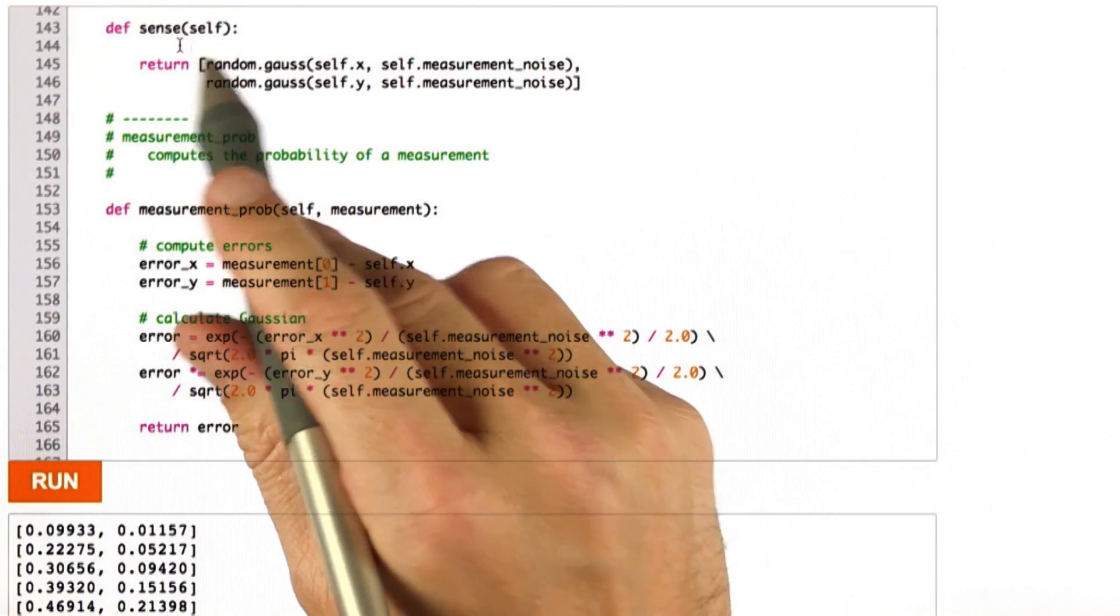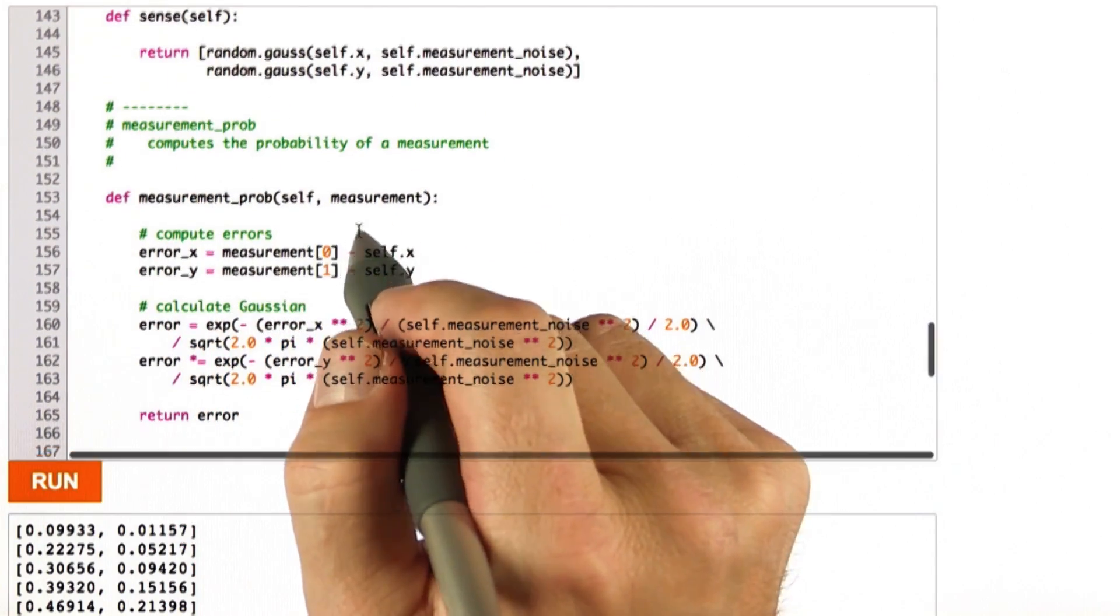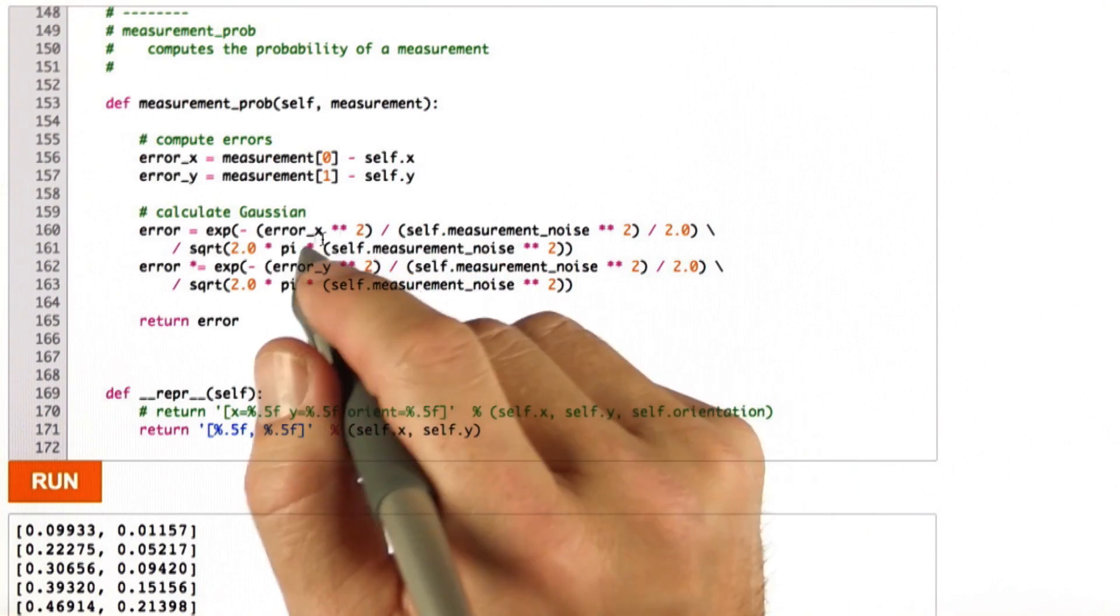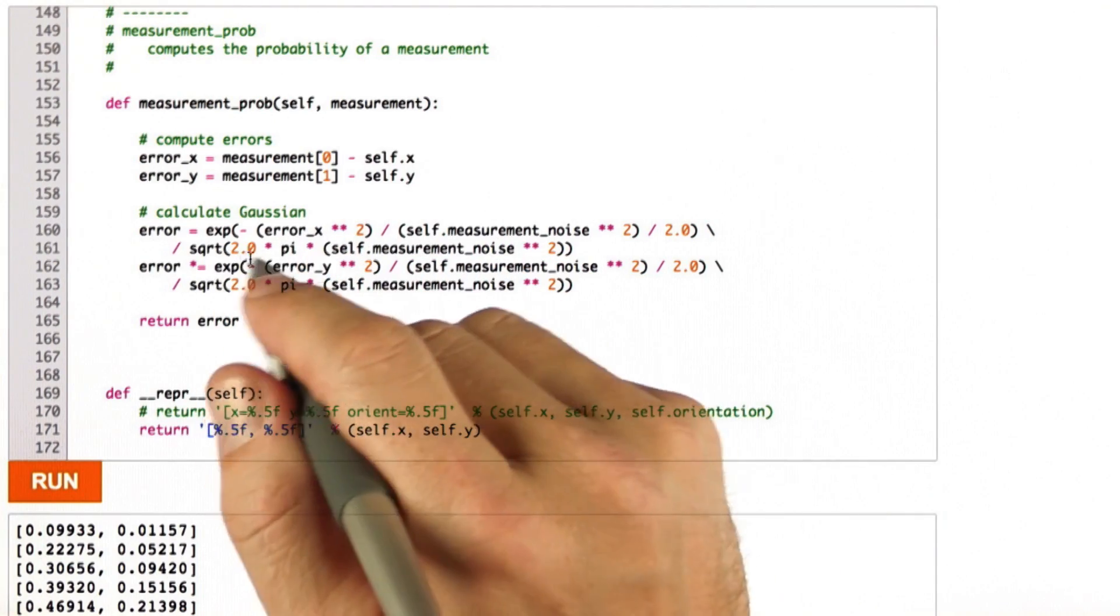Corresponding to this sense function, we have a measurement probability function that you might want to use in your filter. And it evaluates the probability of a measurement relative to the ground truth coordinates of the robot using Gaussians.